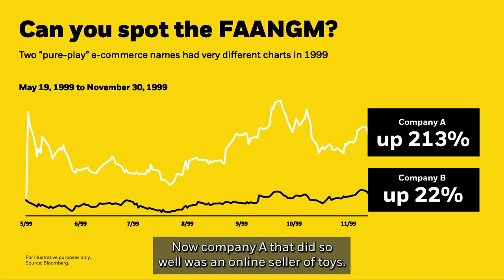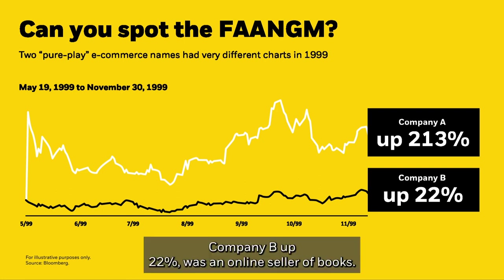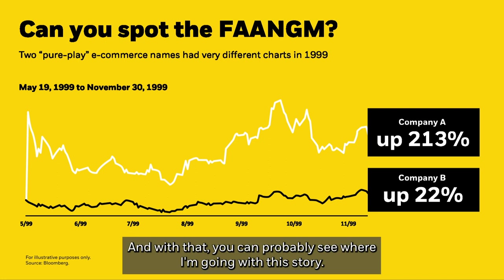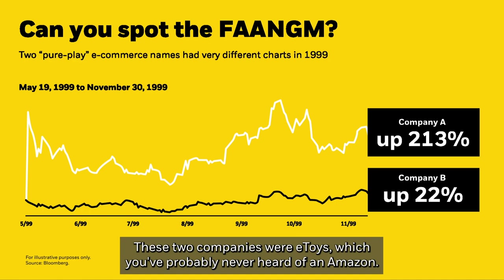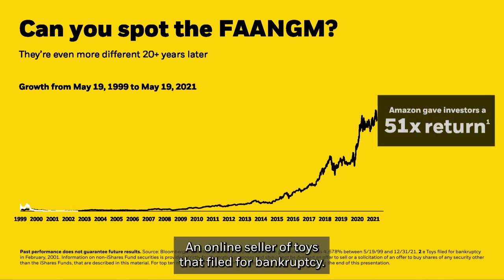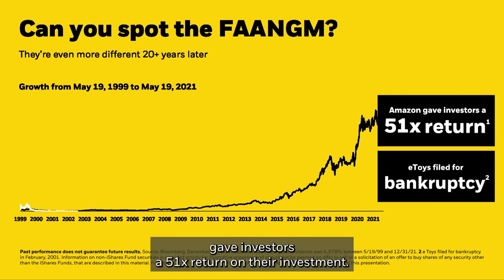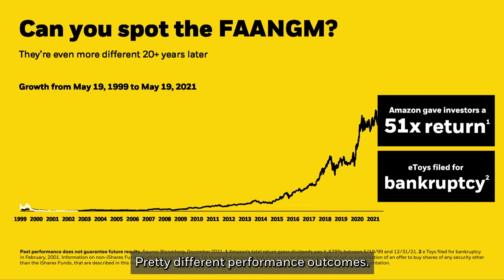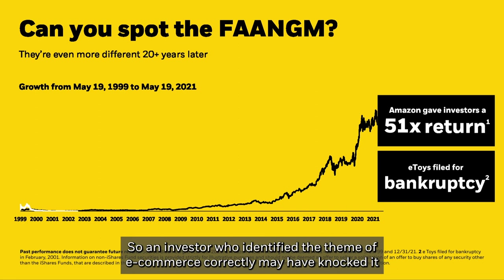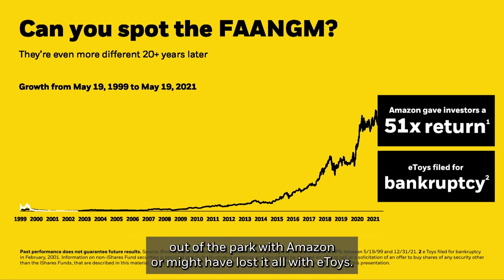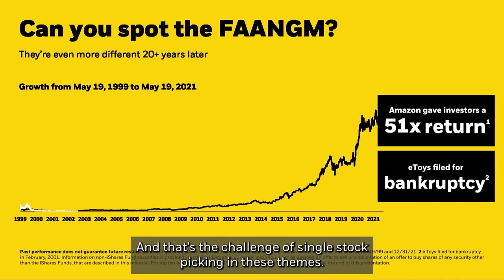Company A that did so well was an online seller of toys. Company B, up 22%, was an online seller of books. These two companies were eToys — which you've probably never heard of — and Amazon. eToys filed for bankruptcy, while Amazon over the next 20 years gave investors a 51x return on their investment. An investor who identified e-commerce correctly may have hit it out of the park with Amazon or lost it all with eToys — that's the challenge of single stock picking in these themes.